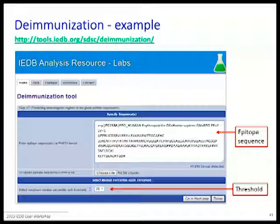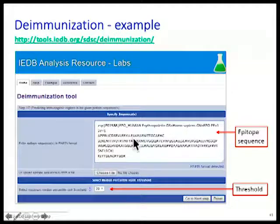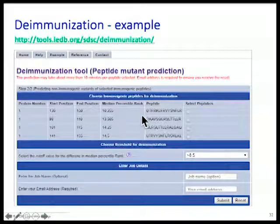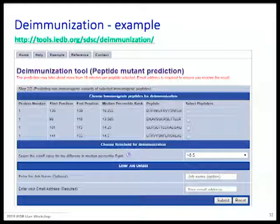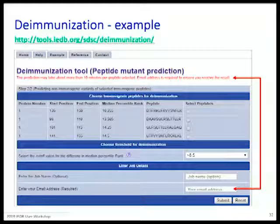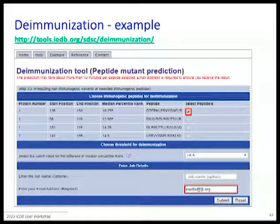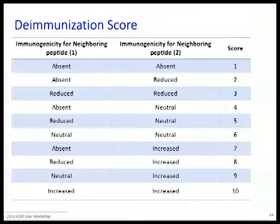It's actually EPO in this example. You set the threshold and off you go. The tool will say it thinks there are four regions flagged as potentially problematic. It takes a little time to run, so you enter your email address and the tool will email you the results when ready. These are the possible outcomes for the two neighboring peptides: the best outcome is that your substitution disrupts binding without creating any new problems to the right or left.